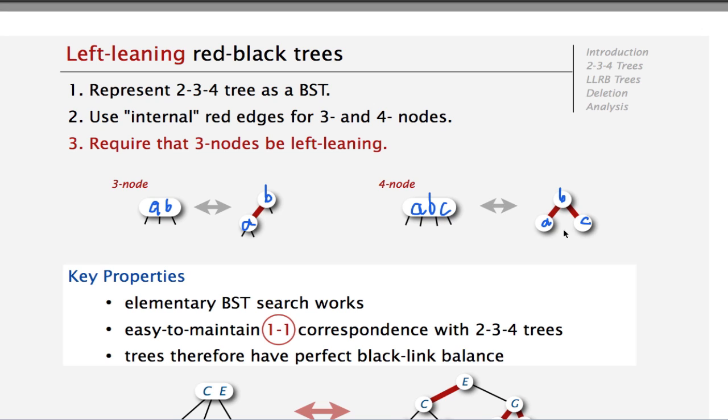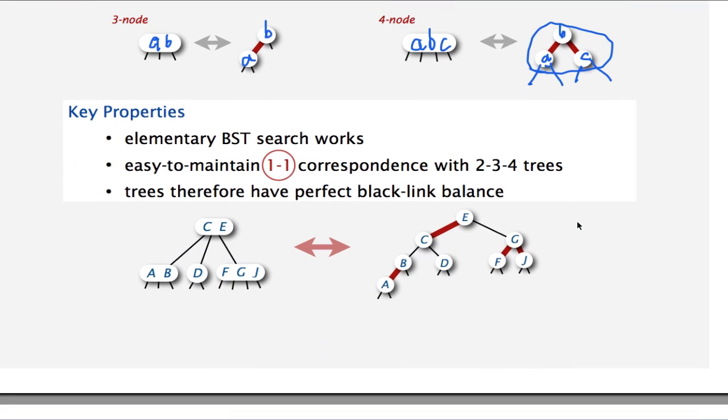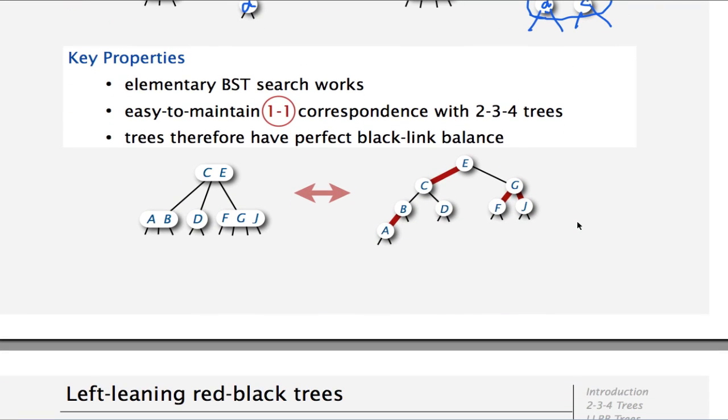And the 4 edges that come out of here would be equivalent to the 4 edges that come out of here. So you can kind of think about this as the internal representation of the 4-node. So this is an example of a tree here, of a 2-3-4 tree. And here is a 3-node and another 3-node and a 4-node.